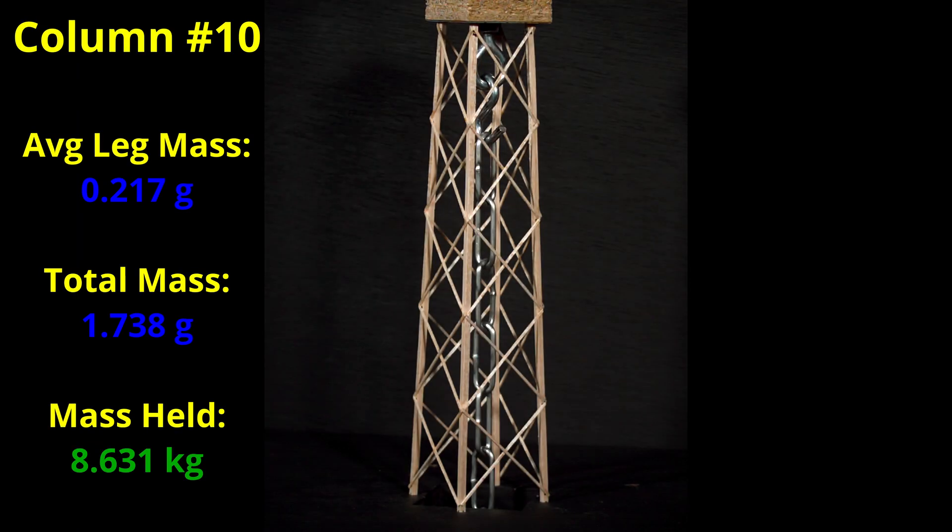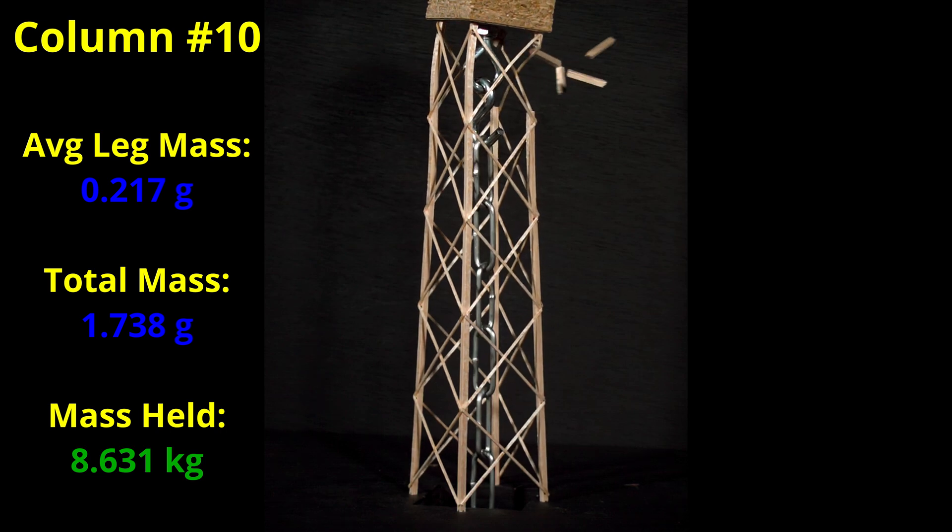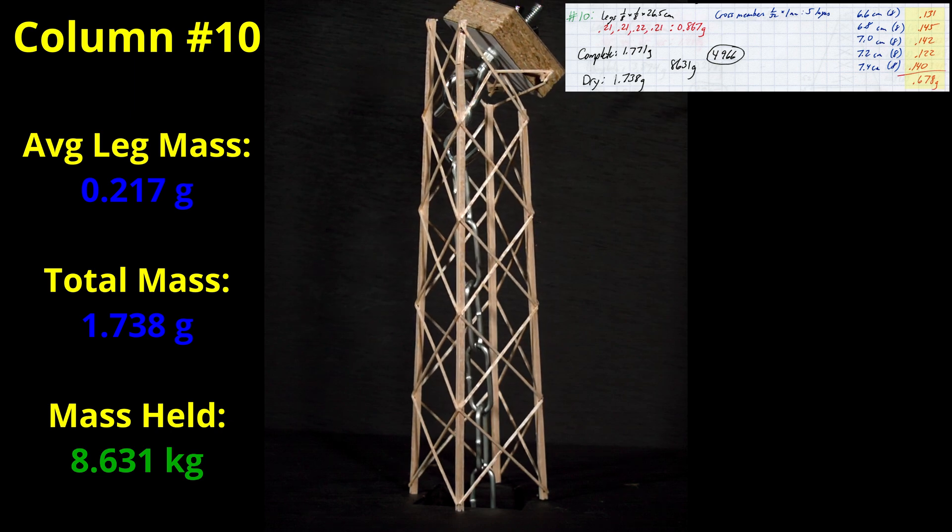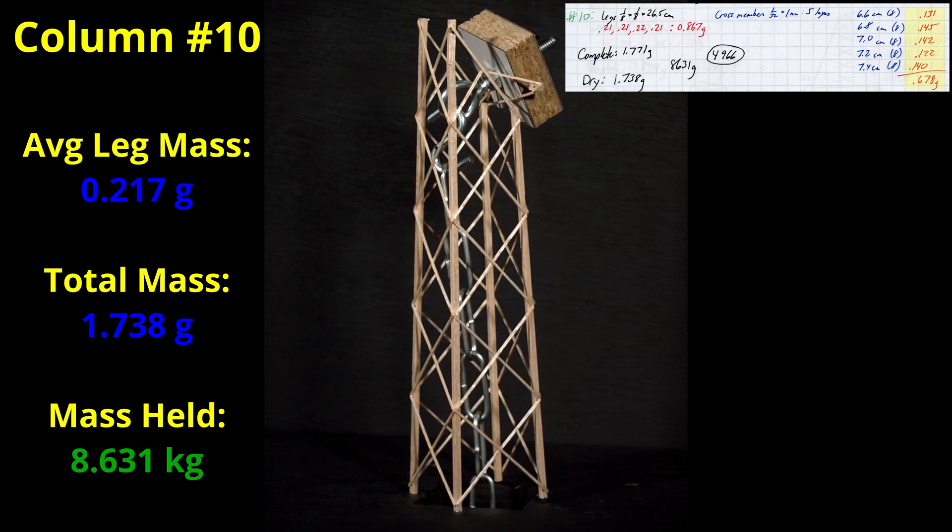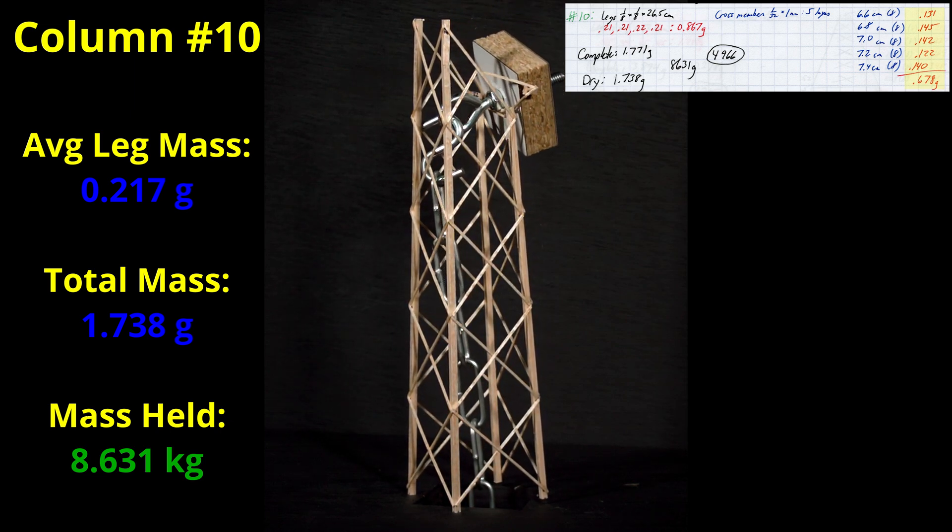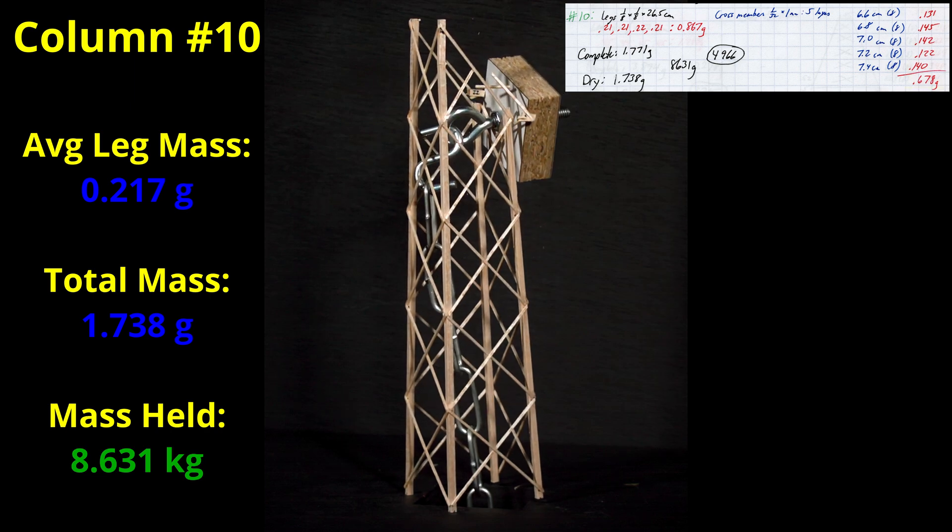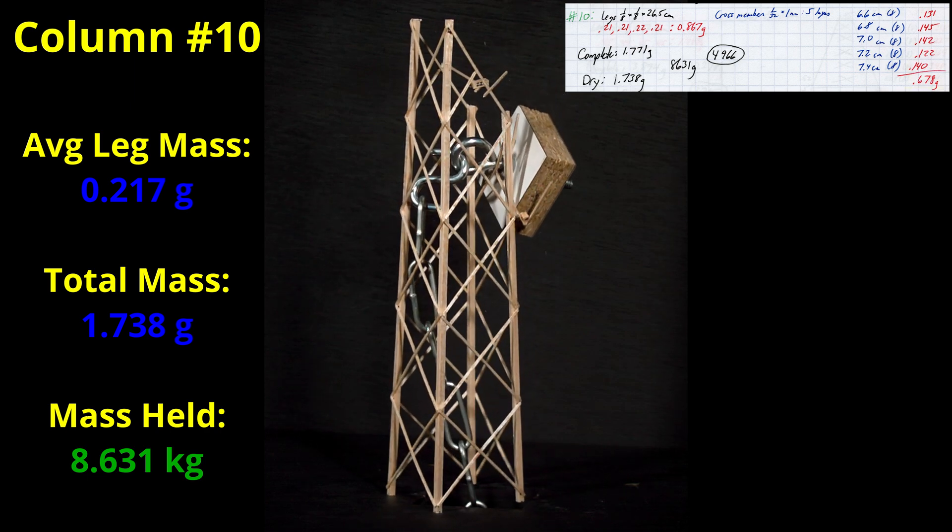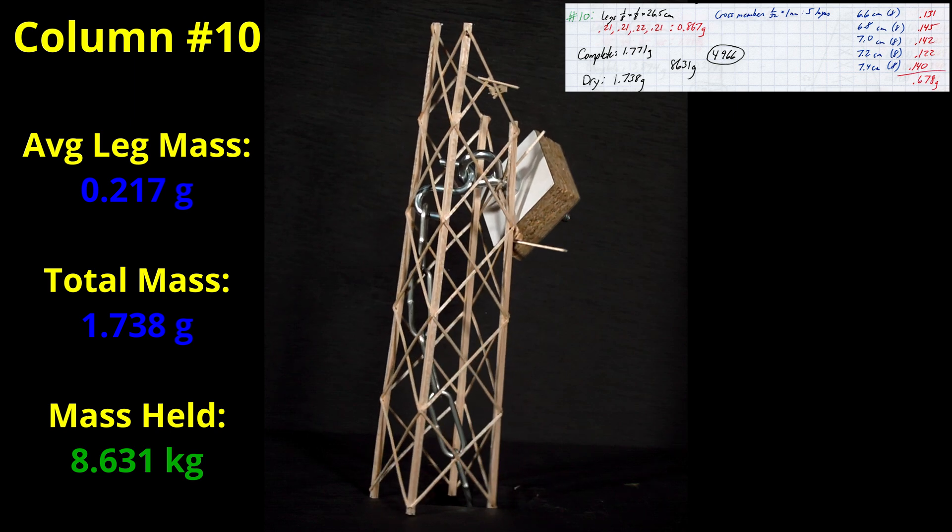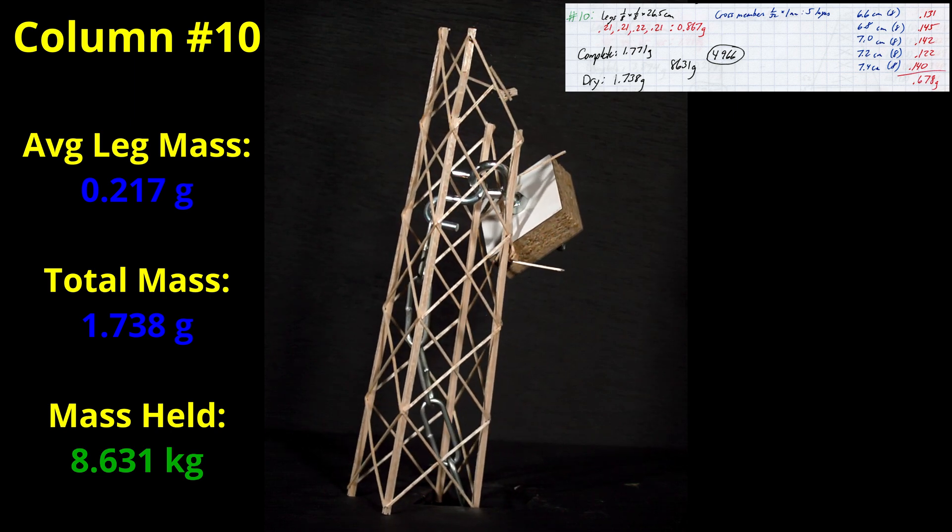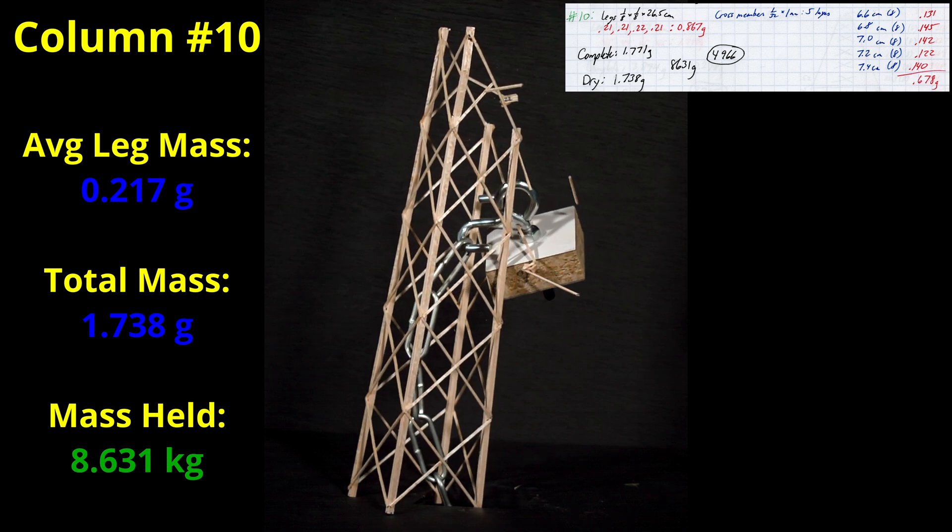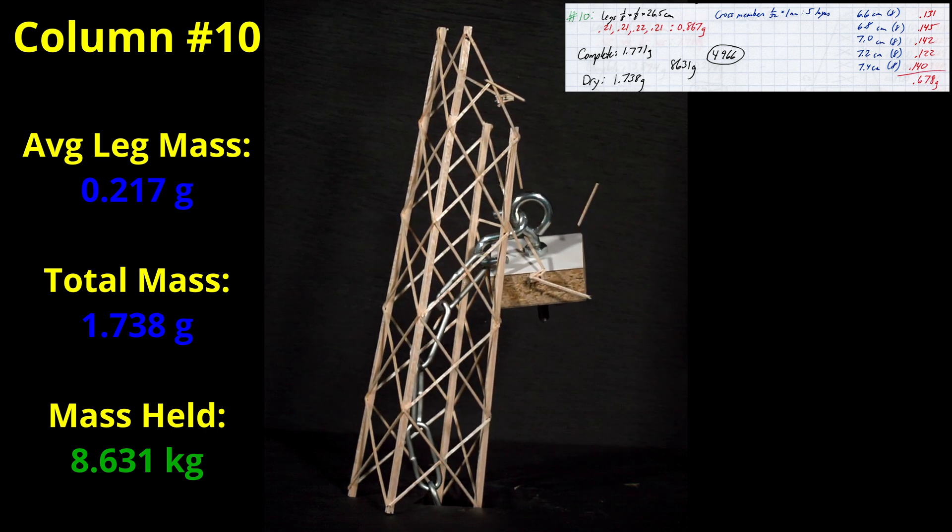Column number 10 also used light legs with an average mass of 0.217 grams and I doubled the density of the 1.32 by 1mm cross bracing material, so the mass used was 0.678 grams. The total mass of the column was 1.738 grams and held only 8.631 kilograms. You can see that the back leg failed first.